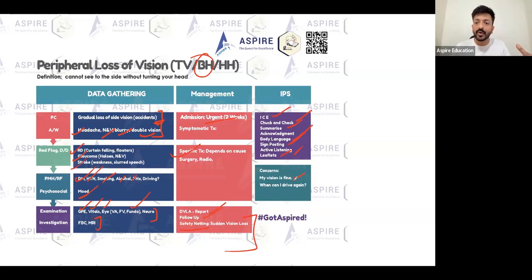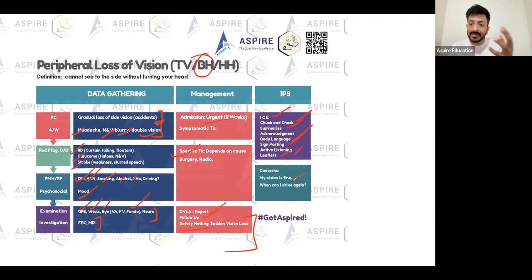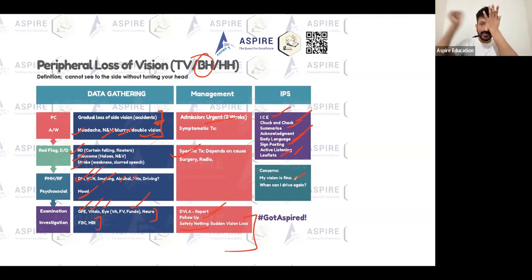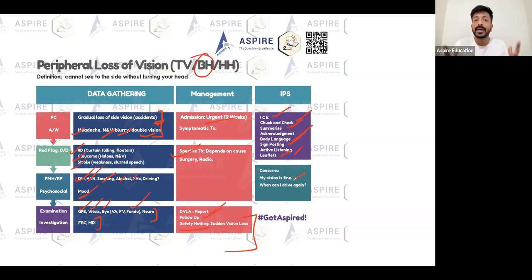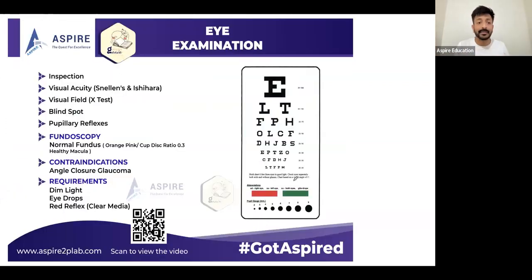The patient might have come for a routine checkup or their family members may have noticed a problem and forced them to go to the eye clinic. They sometimes feel their vision is fine. You need to make them understand what the problem is — explain temporal vision and nasal vision, and where the problem lies, whether nasal or temporal side.